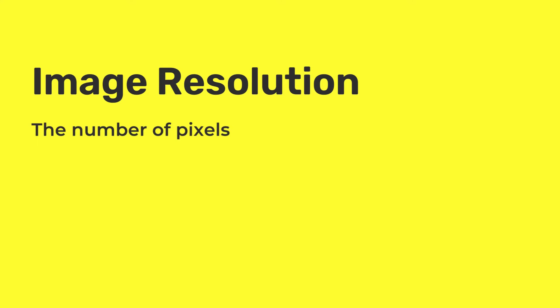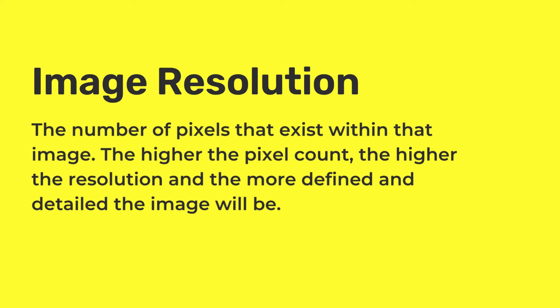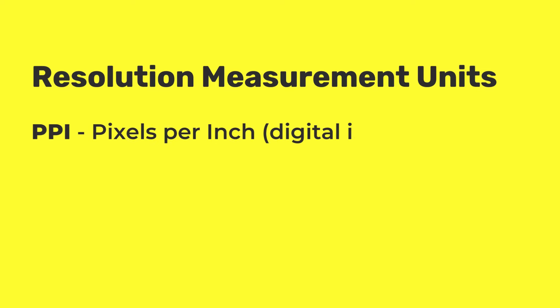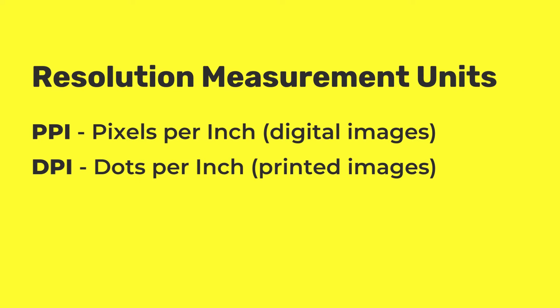So what is image resolution? An image's resolution really comes down to the number of pixels that exist within that image. The higher the pixel count, the higher the resolution, and the more defined and detailed the image will be — especially if we need to view or print it at a larger scale. The resolution of a digital image is measured in PPI (pixels per inch), while the resolution of a printed image is measured in DPI (dots per inch). In Photoshop the ratio of PPI to DPI is one to one, so as digital artists the two values are somewhat interchangeable.